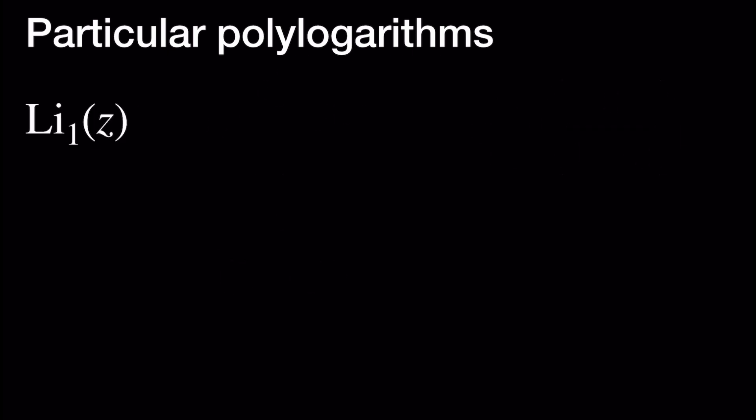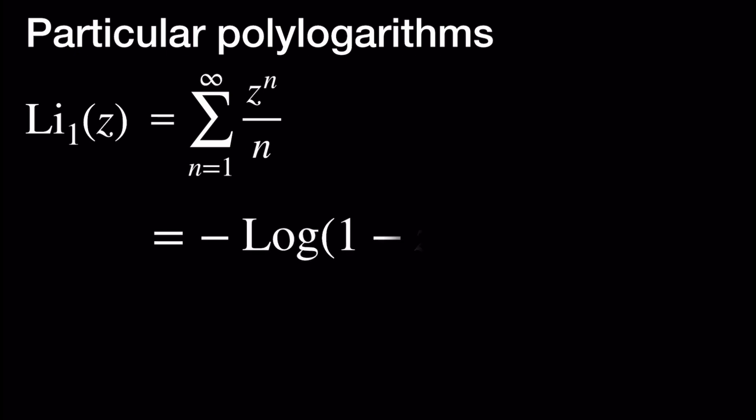Next, we have Li sub 1 at Z, which is equal to the sum as n goes from 1 to infinity of Z to the n divided by n. And this is simply negative log evaluated at 1 minus Z.